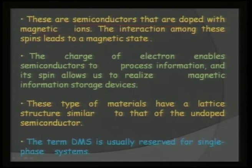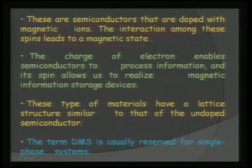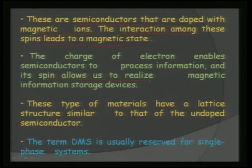Dilute magnetic semiconductors are semiconductors doped with magnetic ions; the interaction among these spins leads to a magnetic state. The charge of the electron enables semiconductors to process information, and the spin allows realization of magnetic information for storage devices. These materials have a lattice structure similar to that of the undoped semiconductor. One of the main requirements is an X-ray single-phase material. Not only must it be X-ray single phase, it should also be magnetically a single phase, because with very small doping levels you may not be able to trace the impurity ion by X-ray — therefore you need to know it is both magnetically and structurally a single phase.